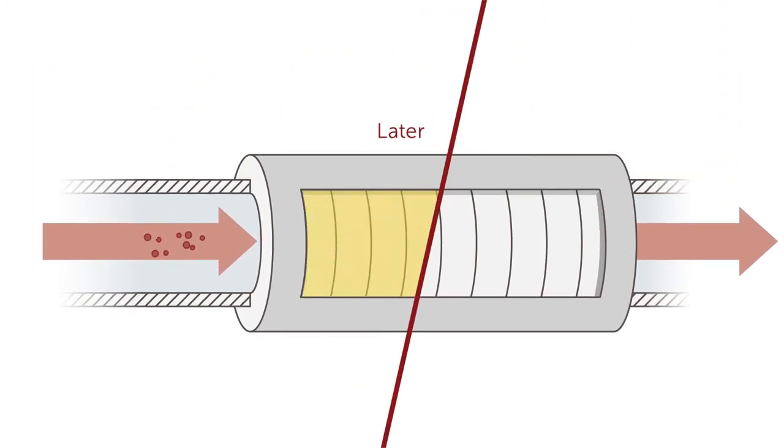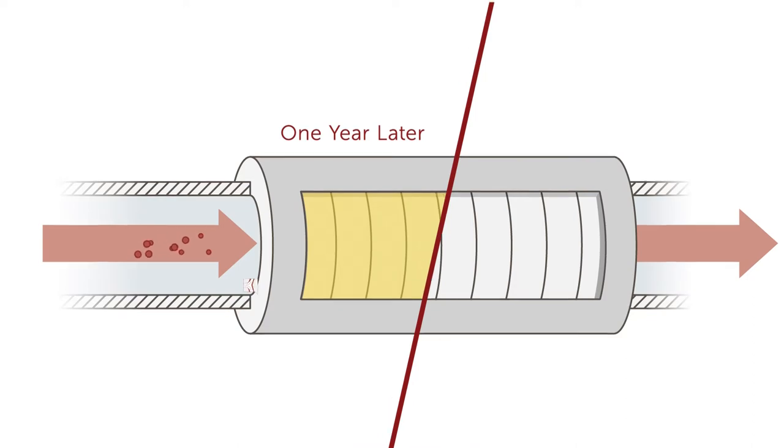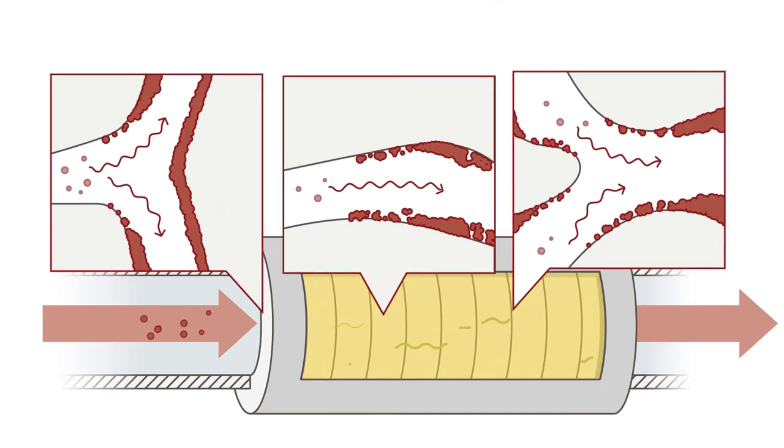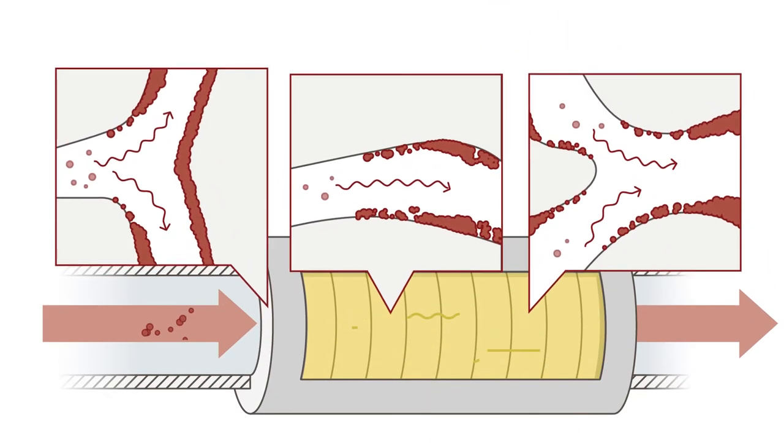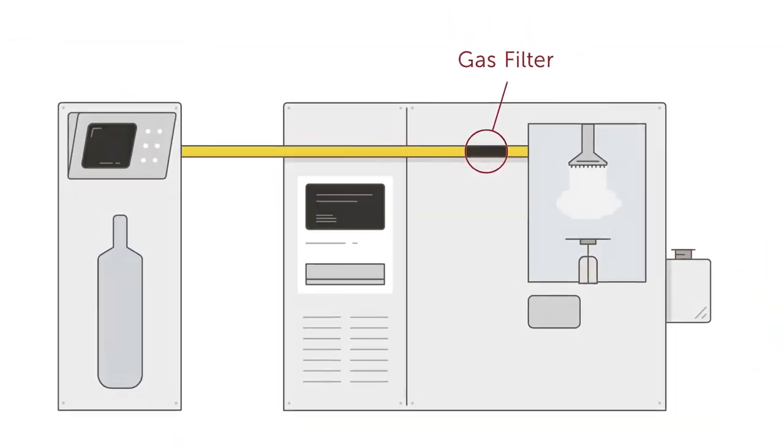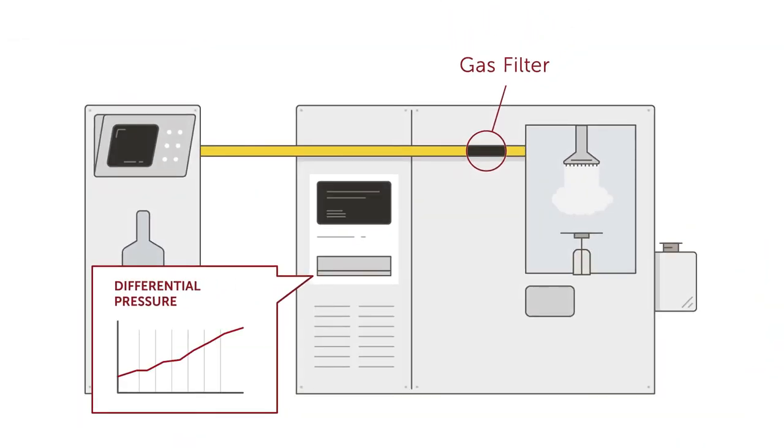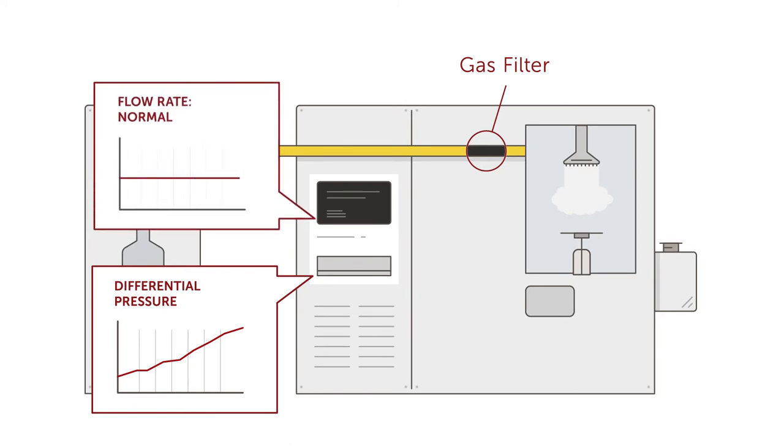However, filters have a finite lifetime. As particles accumulate over time, passages within the filter become constricted. This increases differential pressure, which can impact gas flow rate. Because a consistent flow rate has been maintained, the system does not perceive risk.